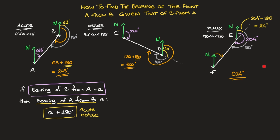This third example shows us that when the initial bearing is a reflex angle, rather than adding 180 degrees, we subtract 180 degrees. That will always be the case for reflex angles. So we can state a second formula: if the bearing of B from A equals angle A, then the bearing of A from B equals A minus 180. These formulas will always work and are really useful to know when working with bearings.